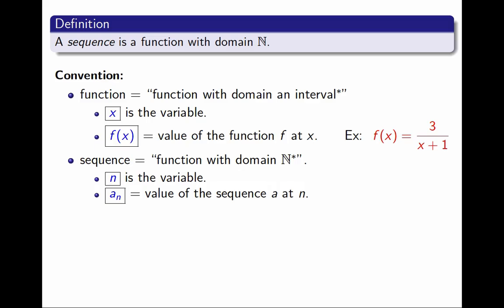So for example, I could define the function f by the equation f of x equals 3 over x plus 1, and I could define a sequence a by the equation a sub n equals 3 over n plus 1. It's the same equation, but in the second case, I'm emphasizing that the domain is only natural numbers. n only takes natural values.